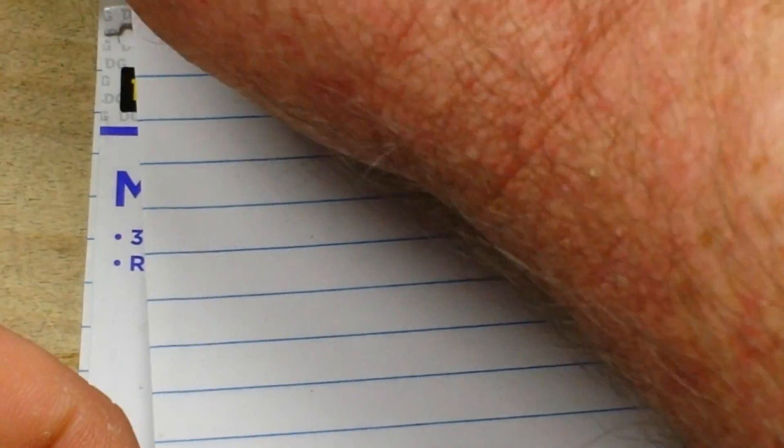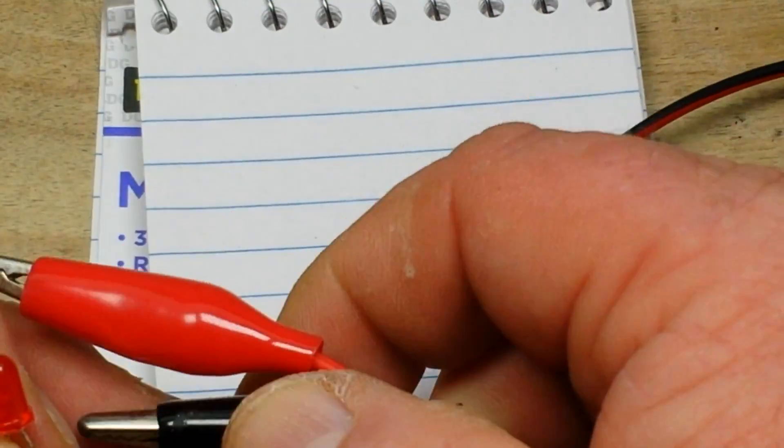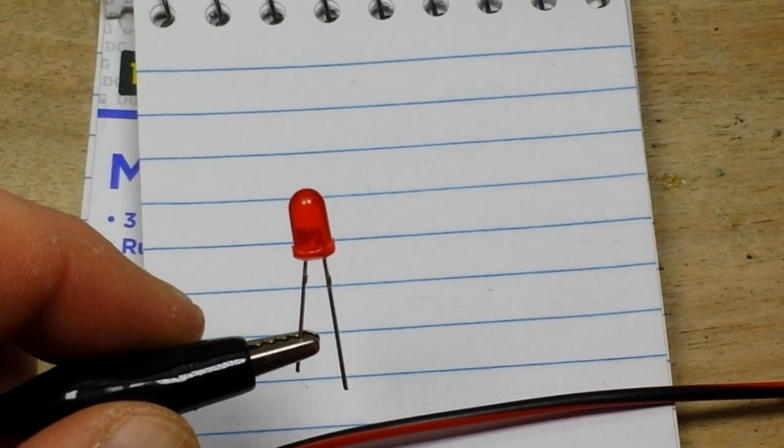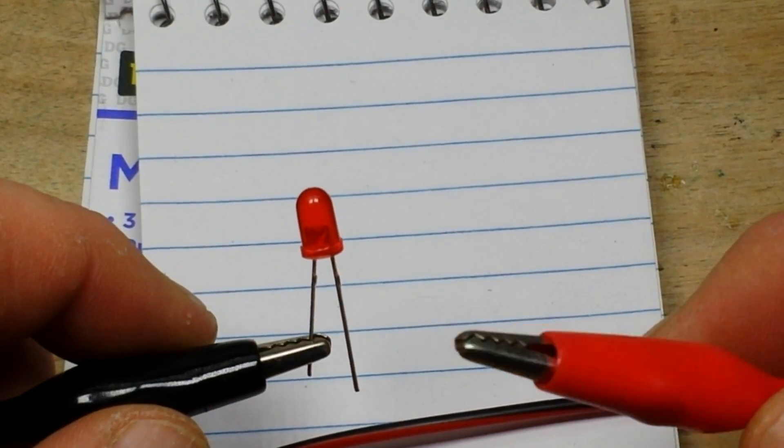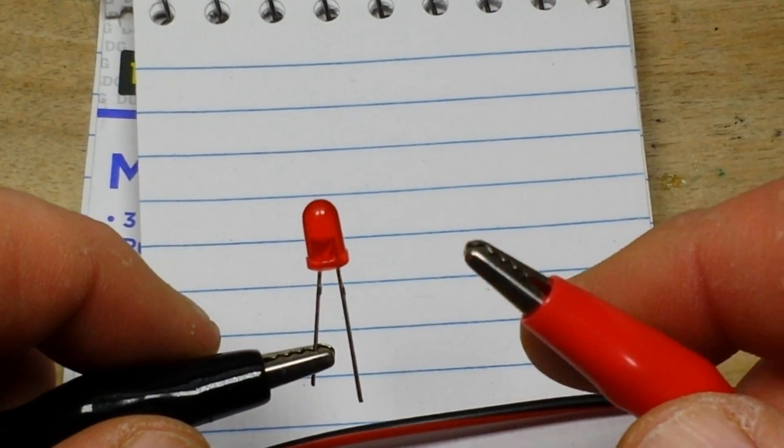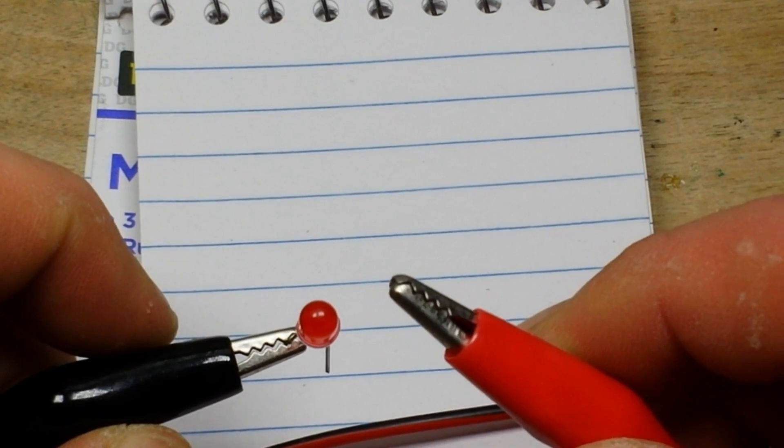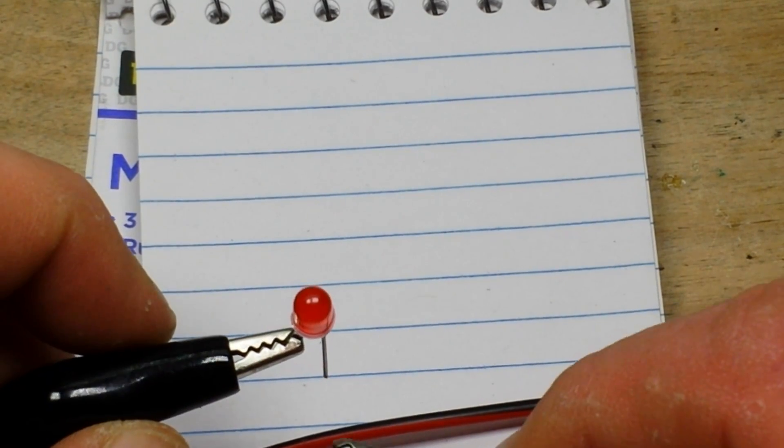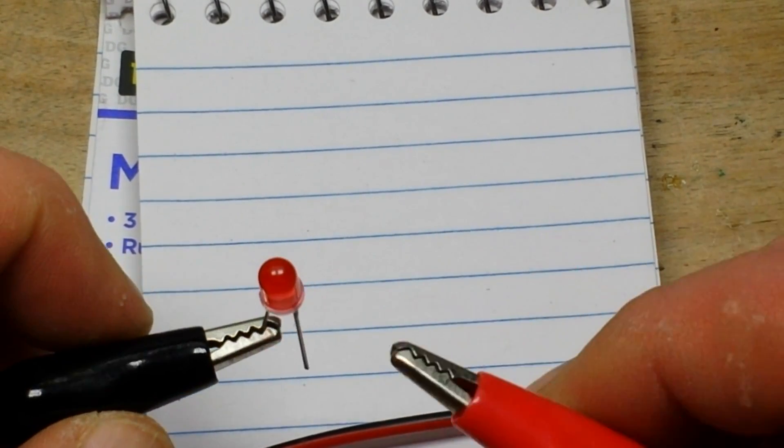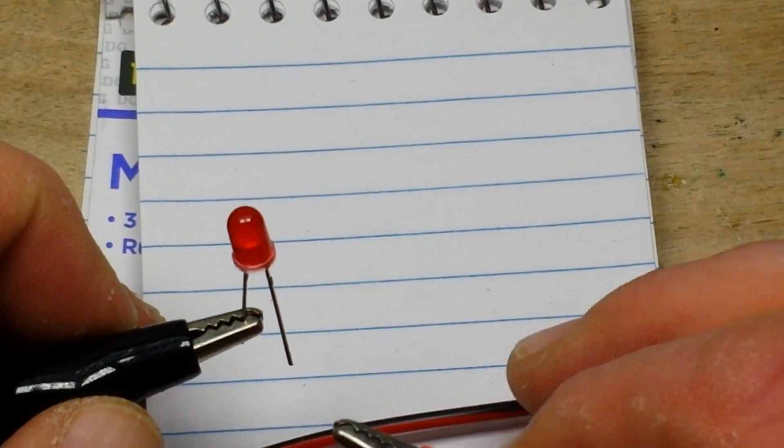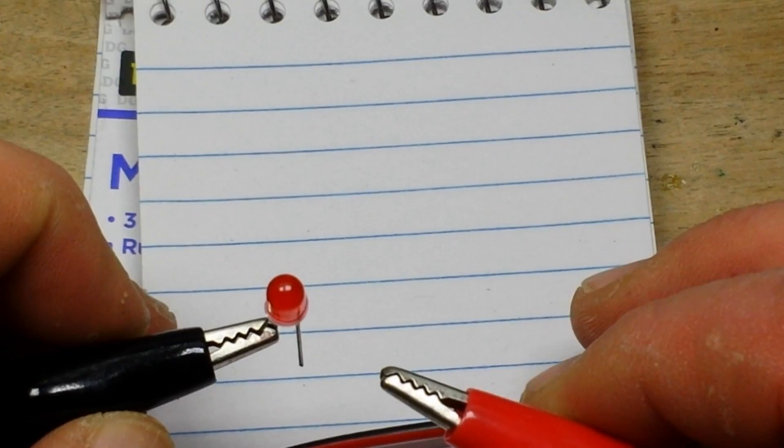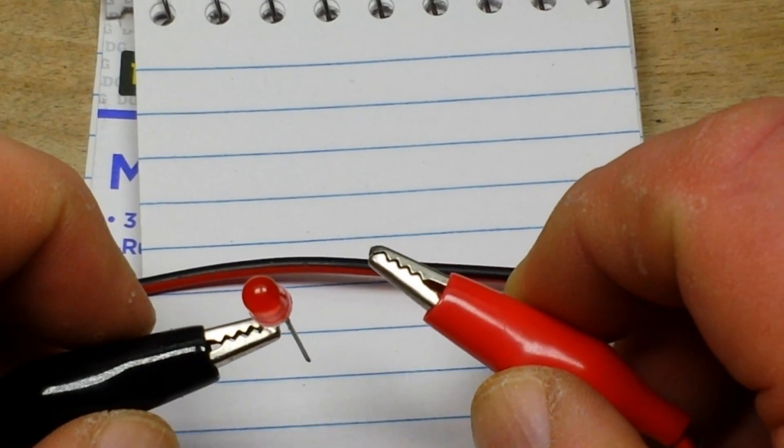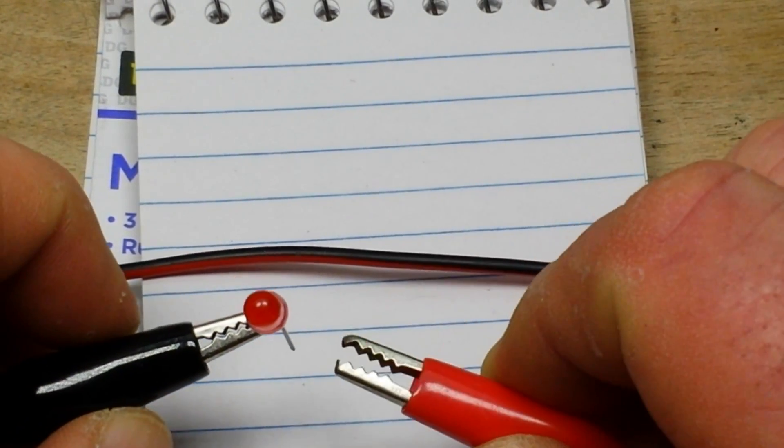Now I have the power supply set for 9 volts with no current limiting on it. The short leg is generally the cathode or the negative. The long leg is generally the anode. But I'll tell you another way here in one second. But I want to show you what happens when you don't have current limiting. An LED is a current driven device and it will take as much current as you want to put through it until it burns itself out.